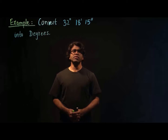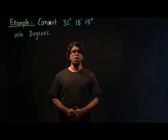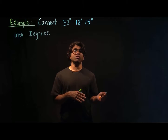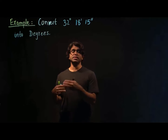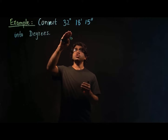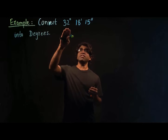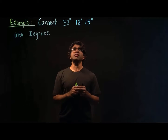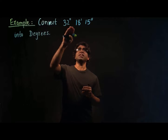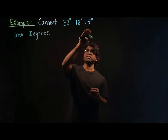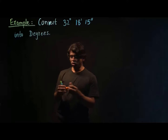We already know the relation between degrees, minutes, and seconds, and we already know how to convert from degrees minutes seconds to degrees, or from degrees to degrees minutes and seconds. So let's talk about an example where we need to convert this angle, which is given as 32 degrees 18 minutes and 15 seconds, into degrees. The question is given in terms of degrees minutes and seconds, and we need to convert this into degrees only.